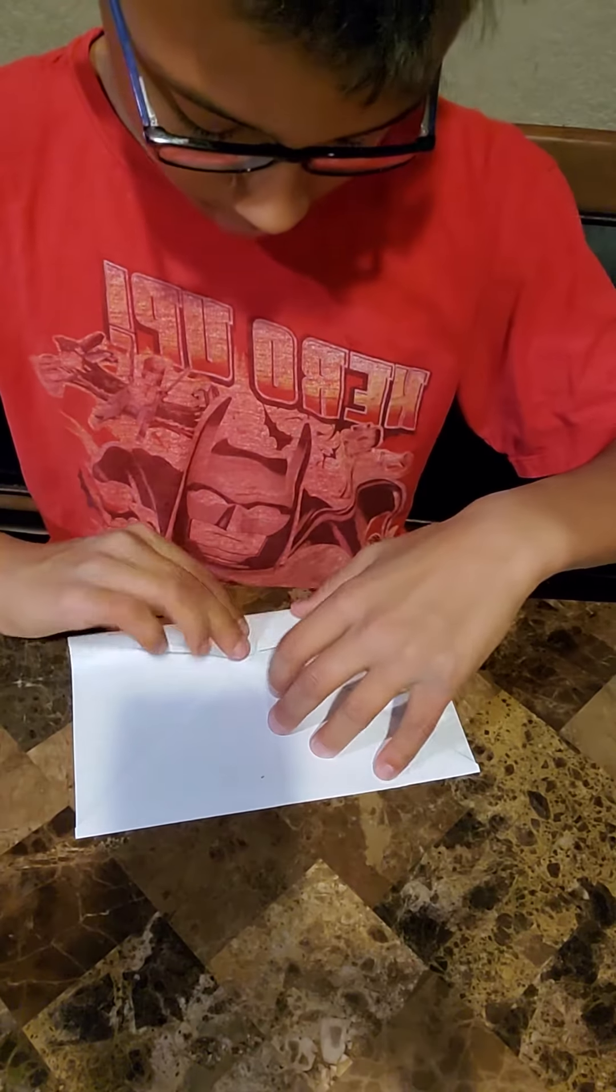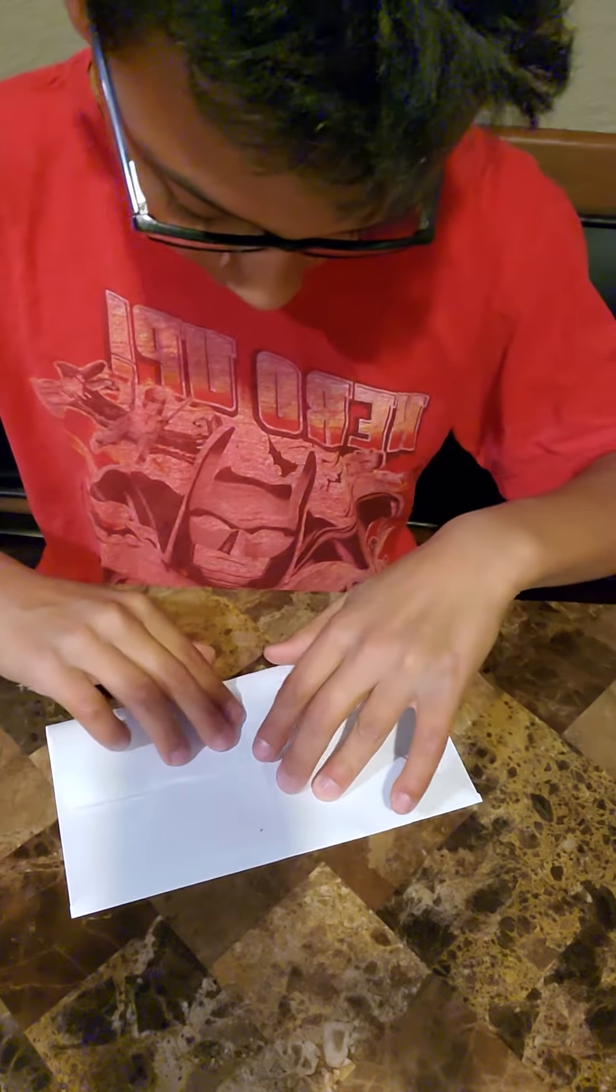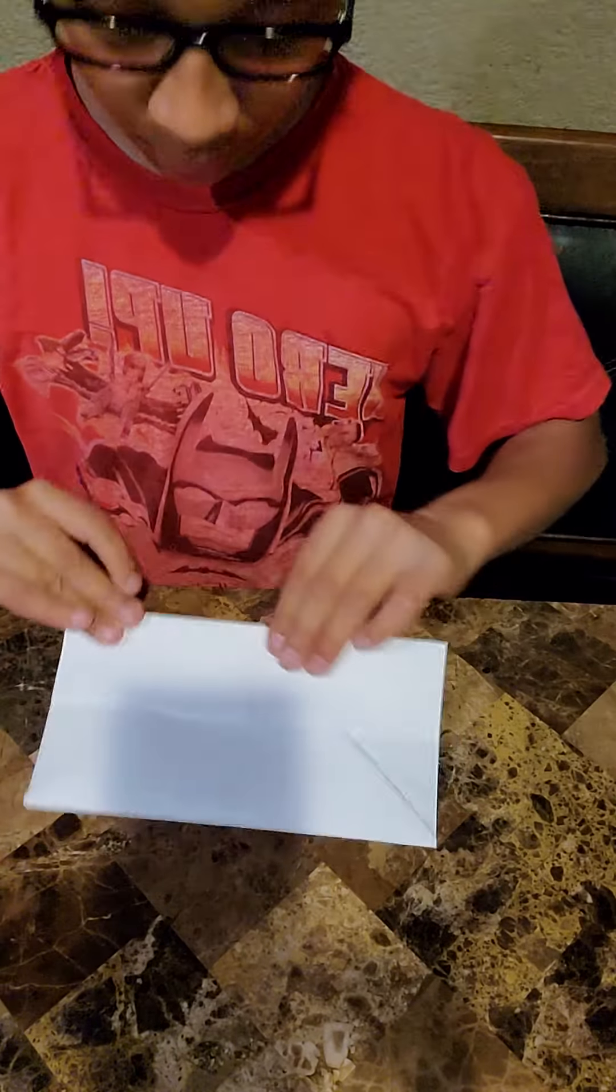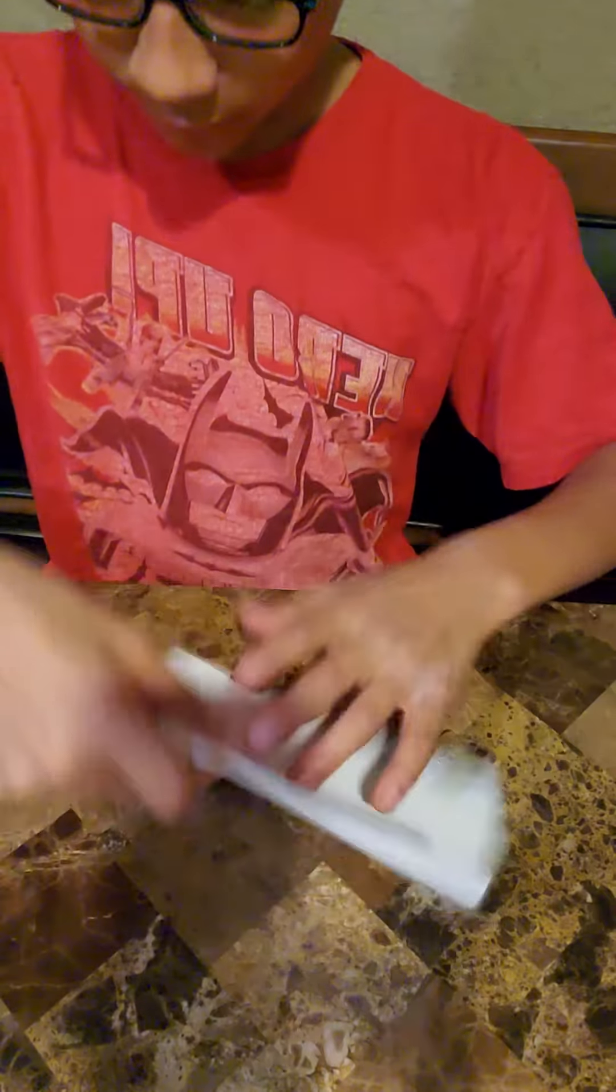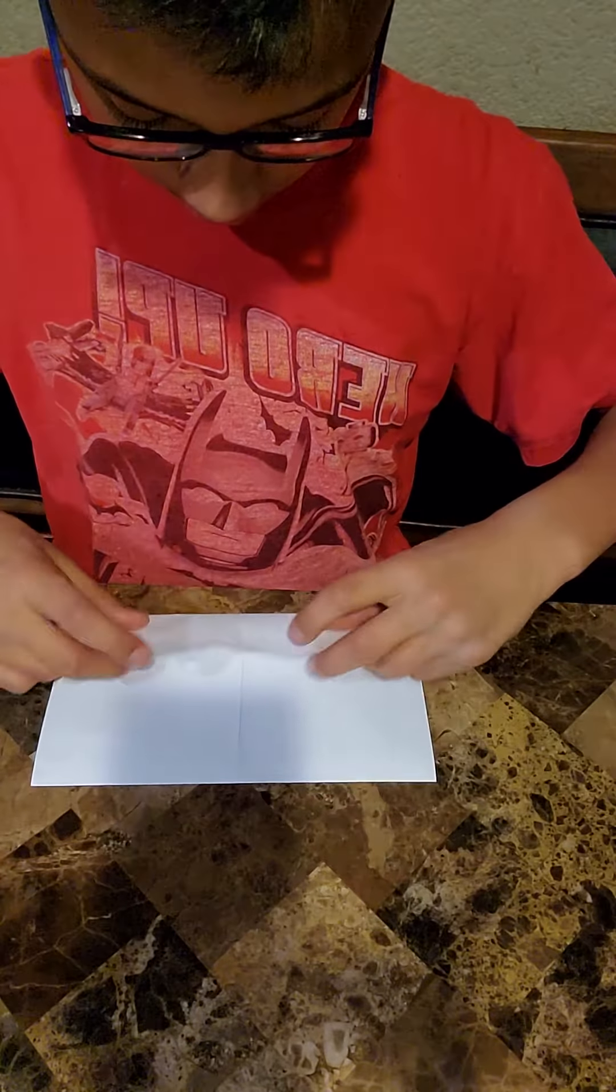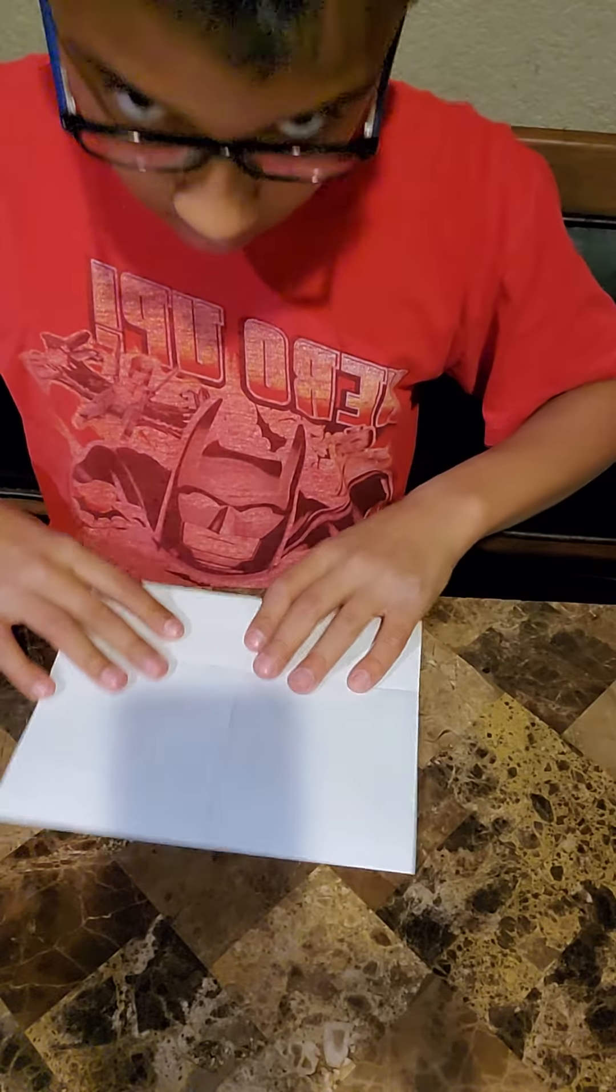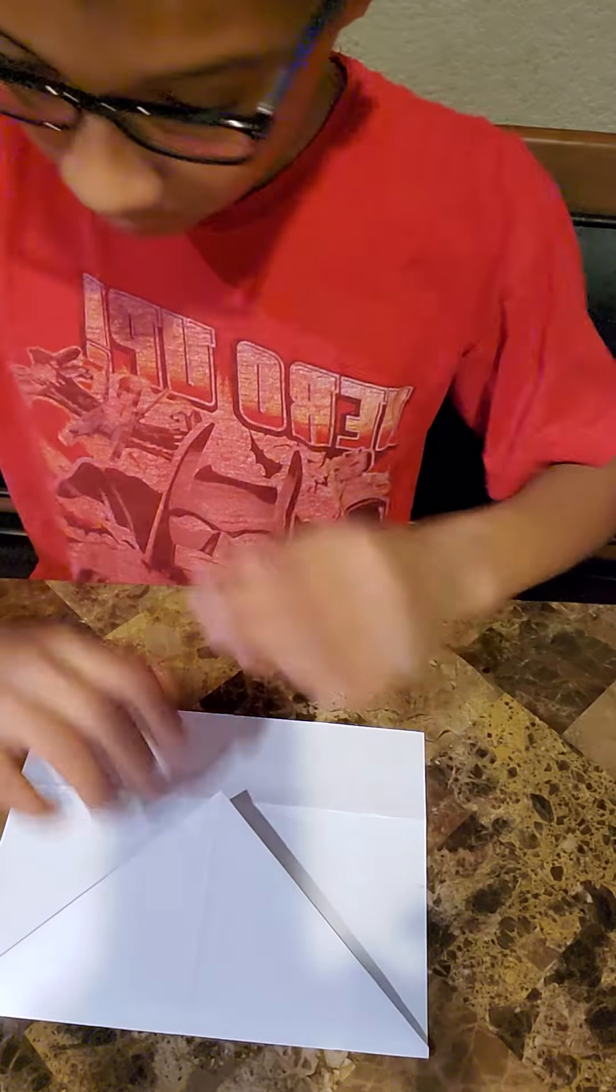Then, you grab the end of the paper and fold it to the point where you're kind of in like the middle of the giant triangle that you would have. Then, unfold that. Then, flip that over. Do the same thing, but on the other side. Okay, it should look like this. So, it creases all over the place.